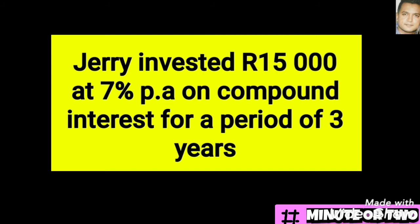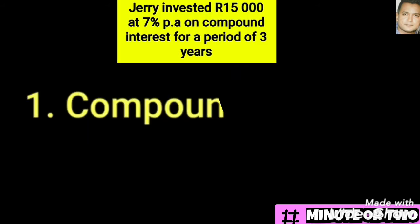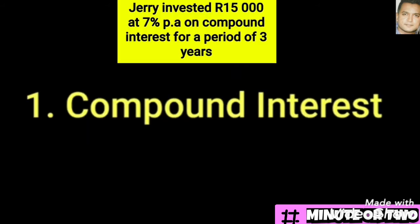Jerry invested R15,000 at 7% per annum. We know that p.a. stands for per annum, meaning each year or yearly, so it is interest that's covered for the entire year. This is a compound interest problem for a period of three years. When you look at a problem like this in an exam, you need to look for key elements.